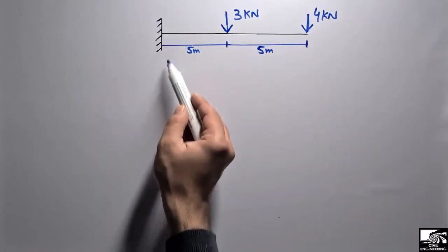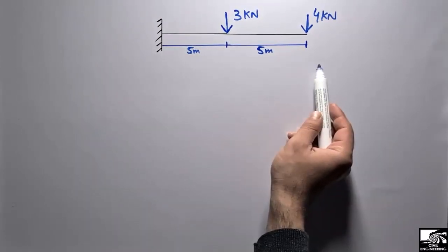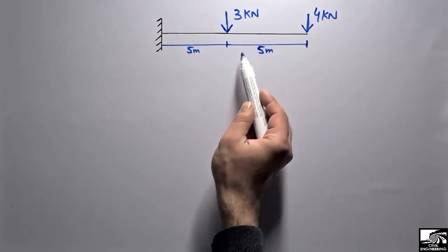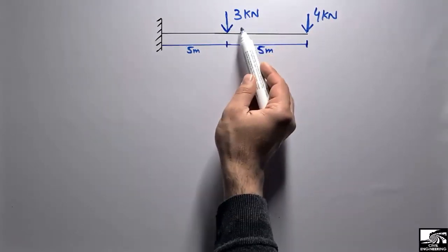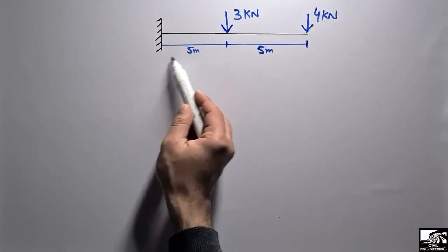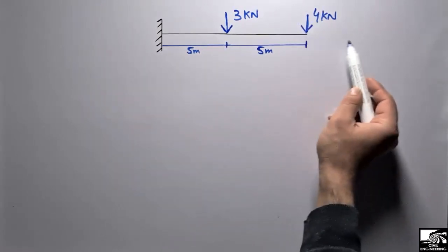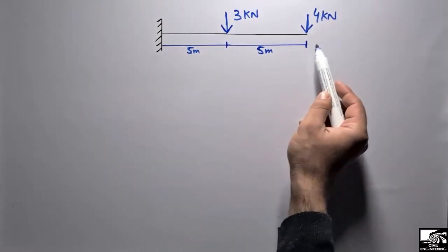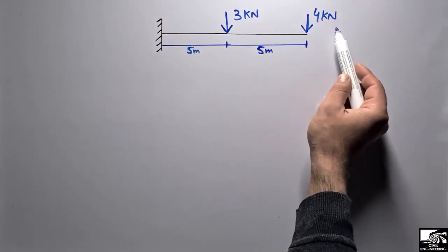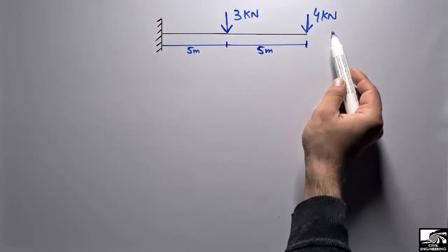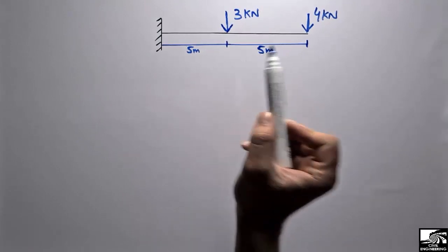This cantilever beam has a total length of 10 meters with two concentrated loads: one point load of 3 kilonewtons at a distance of 5 meters from the left support, and the other point load at the other end of the cantilever beam which is 4 kilonewtons in magnitude.